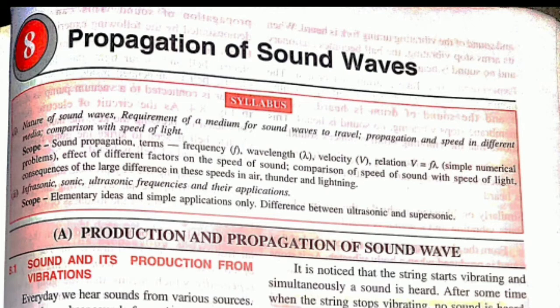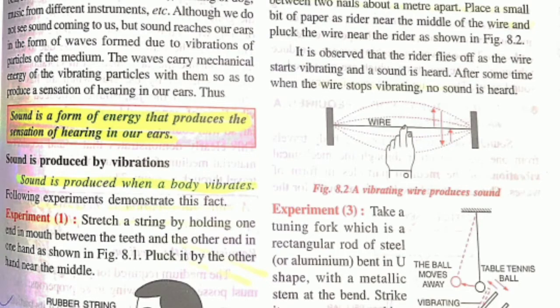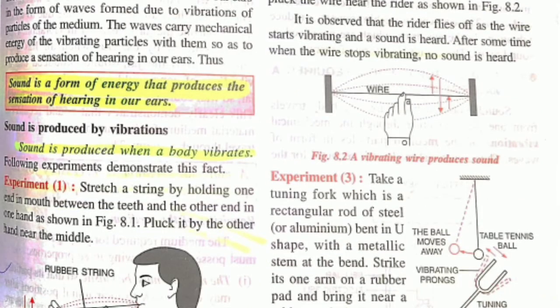Hey guys, welcome back to my channel Yohan's Tutorial. Today we are going to read the physics chapter on sound, which comprises two exercises we will cover in this one video. We are going to discuss only the important things. First, the definition of sound: sound is a form of energy — light energy, heat energy, and sound energy — that produces a sensation of hearing in our ears.